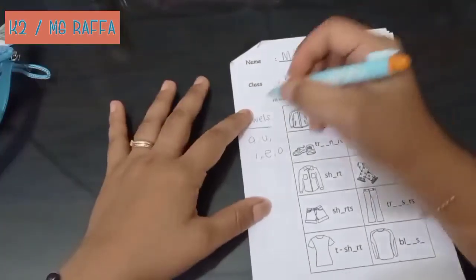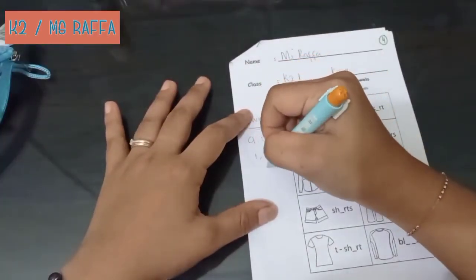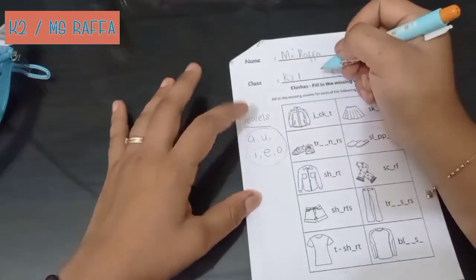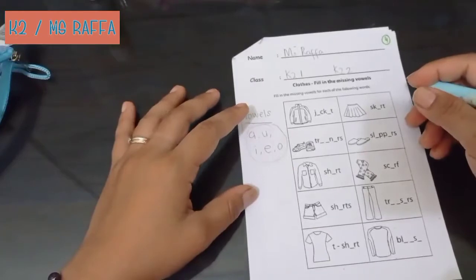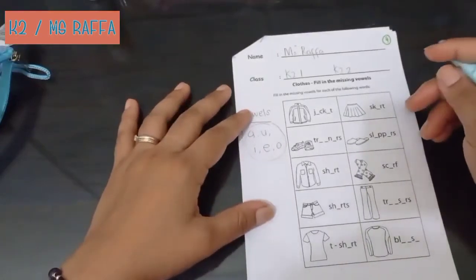Okay. This is just the vowels. A, I, U, E, O. A, I, U, E, O. Okay. A, I, U, E, O. It's in Bahasa Malaysia.